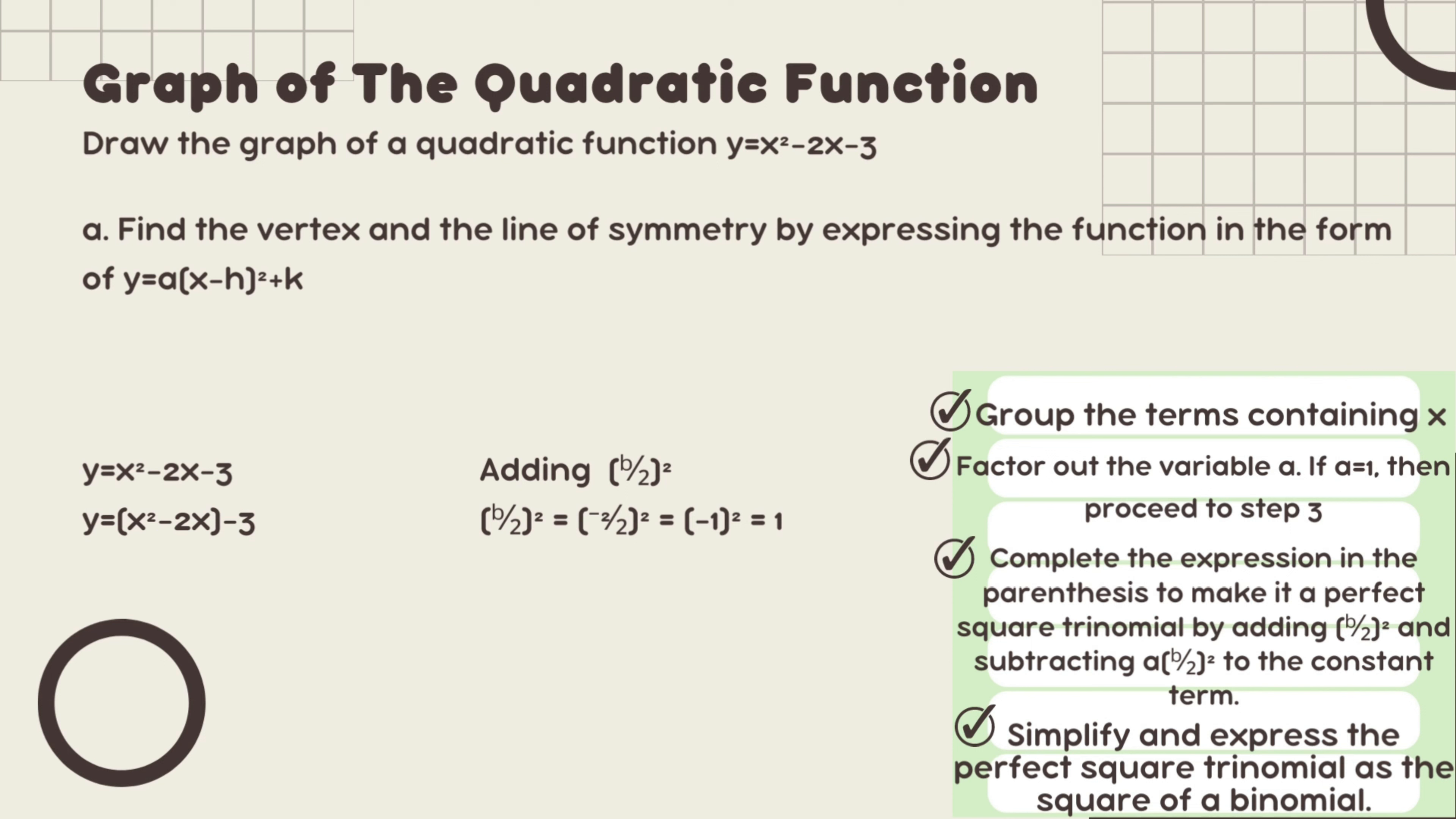Then step 2 is to factor out the variable a. Since a equals 1, we will only proceed to step 3, which is adding the quantity of b over 2 squared, where the value of our b is negative 2. So negative 2 over 2 squared, it can be simplified and divided by 2, which is its denominator. Then the answer will be negative 1 times negative 1 again, since it says here negative 1 squared. Then the answer will be positive 1.